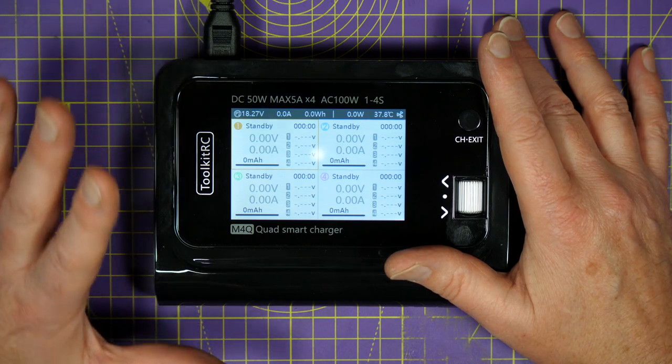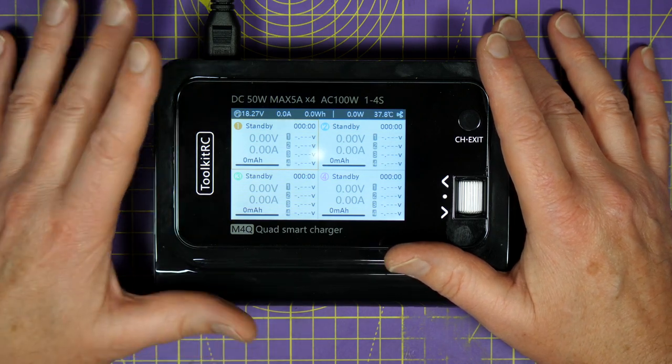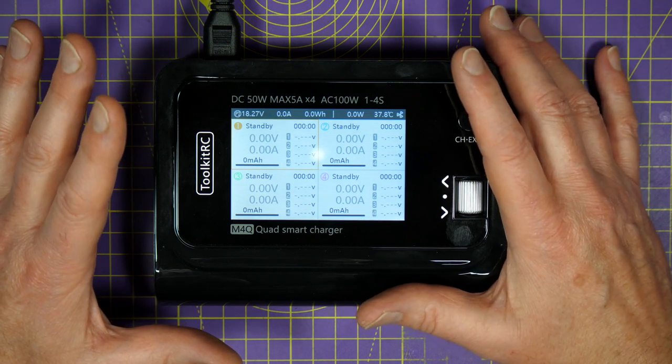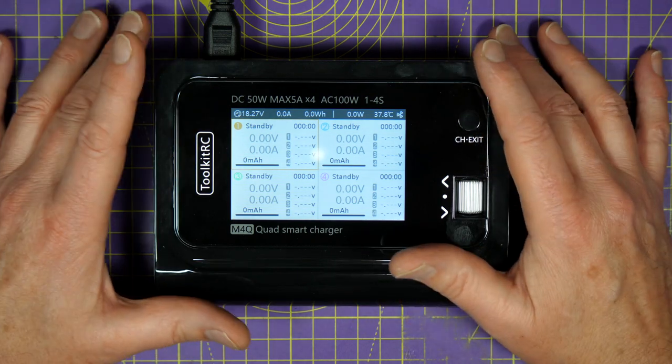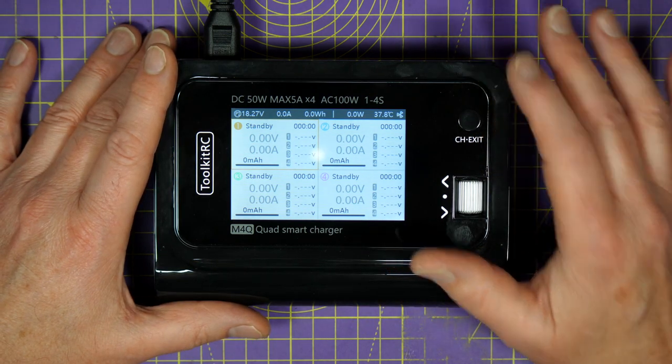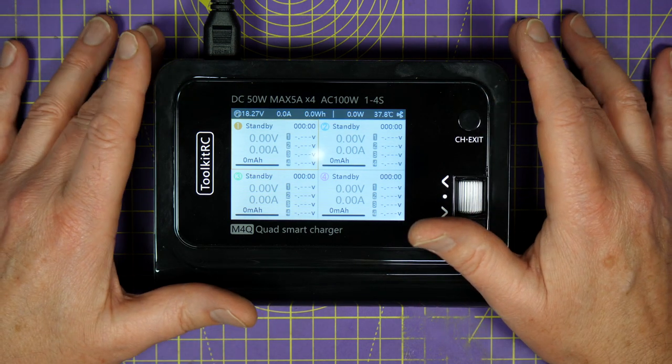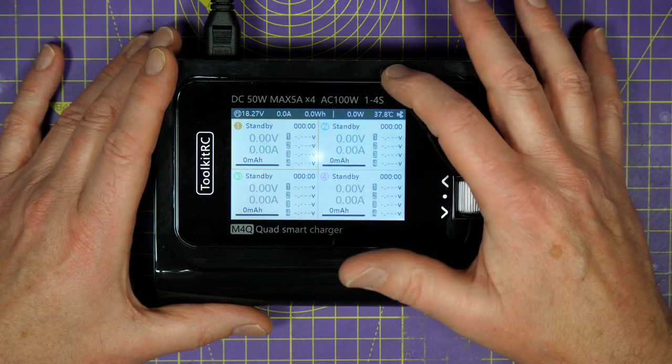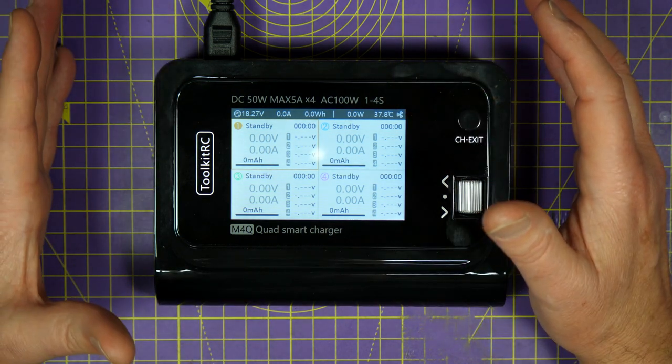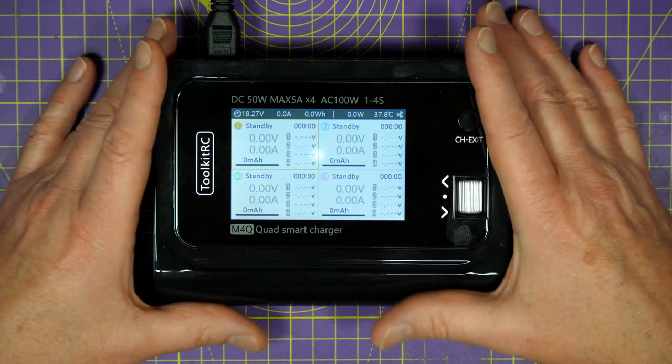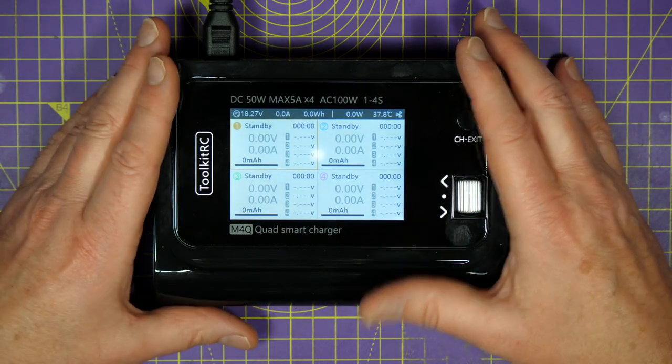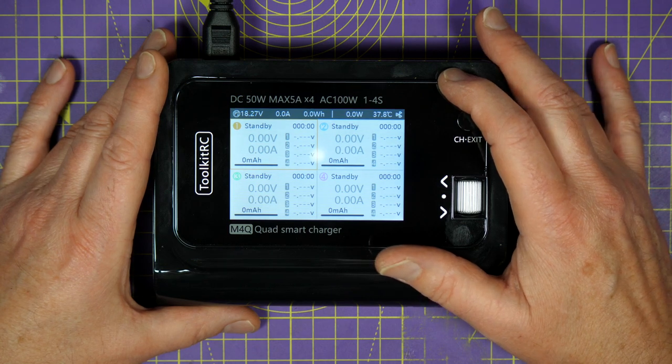One last thing you need to know. This only charges up to 4S batteries. Now, you may think that's a bit of a restriction, but I think it's a very smart decision by Toolkit RC. So, if this was capable of charging 5 and 6S packs, not only is it going to need a bigger internal power supply, everything needs beefing up. And that means it would need to be physically bigger. And more importantly, it would bump the price right up. I think they've hit the sweet spot with this.